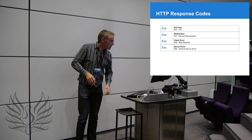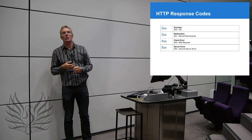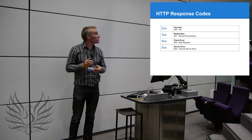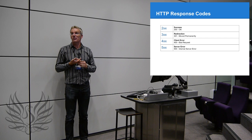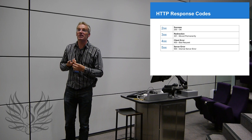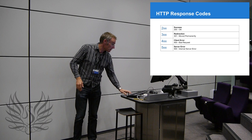2xx codes are success codes, 3xx codes are redirections, 4xx codes are client errors, and 5xx codes are server errors. Within there there's all sorts of interesting ones — like the 'I'm a teapot' error, which was an April Fools' one that got slipped into the specification. There are all sorts of things in there you can have a look at.